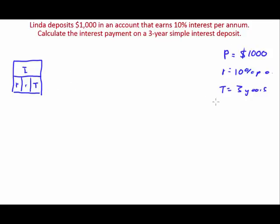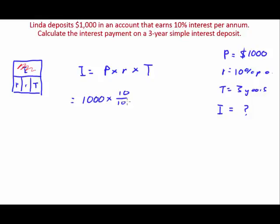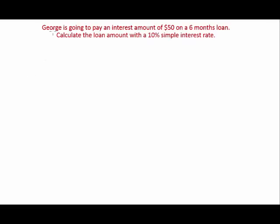We can see that we're missing one variable which is I, so we need to find the interest payment. After we shade out the interest, the formula is P × R × T. To find the simple interest amount: principal multiplied by the simple rate of interest multiplied by the time — that's 1000 × 10% × 3. This simple interest payment is $300.